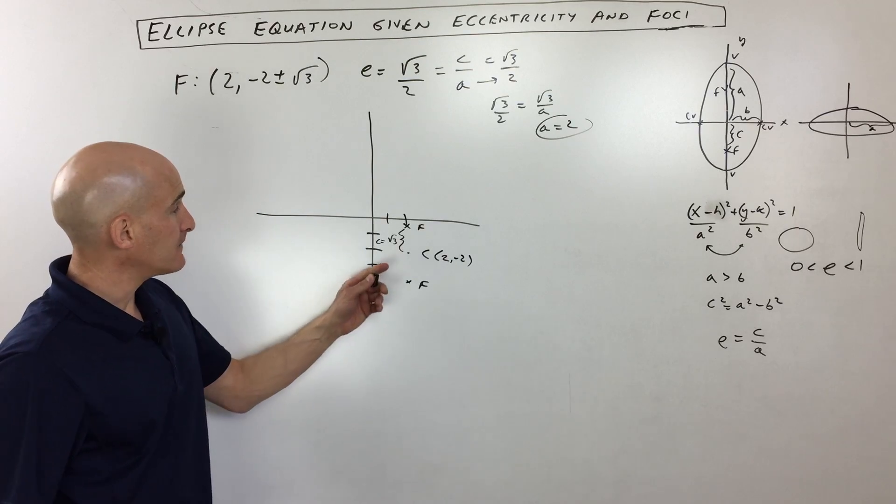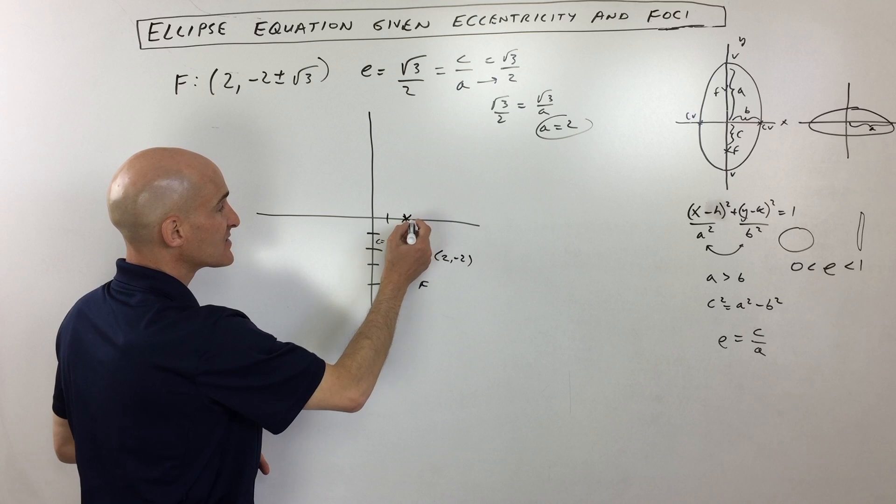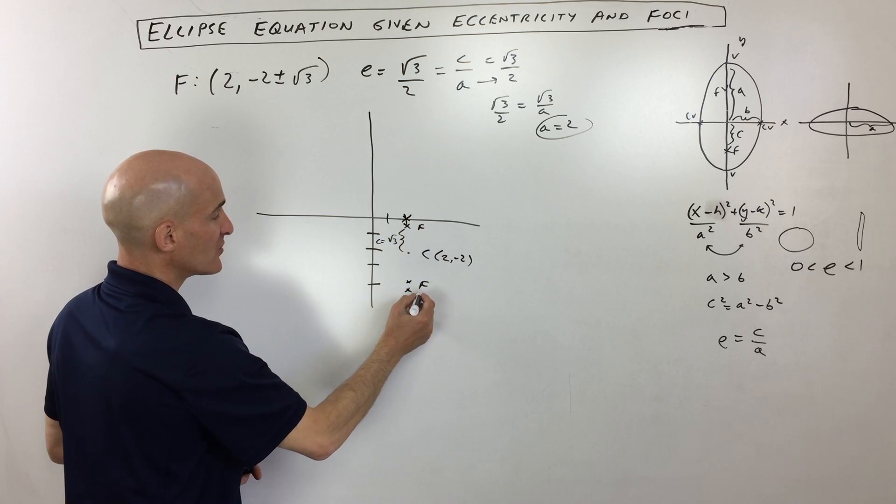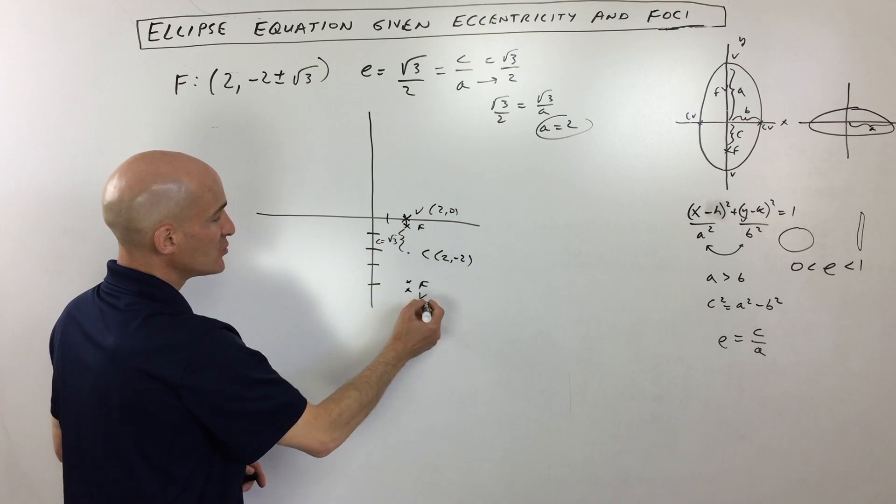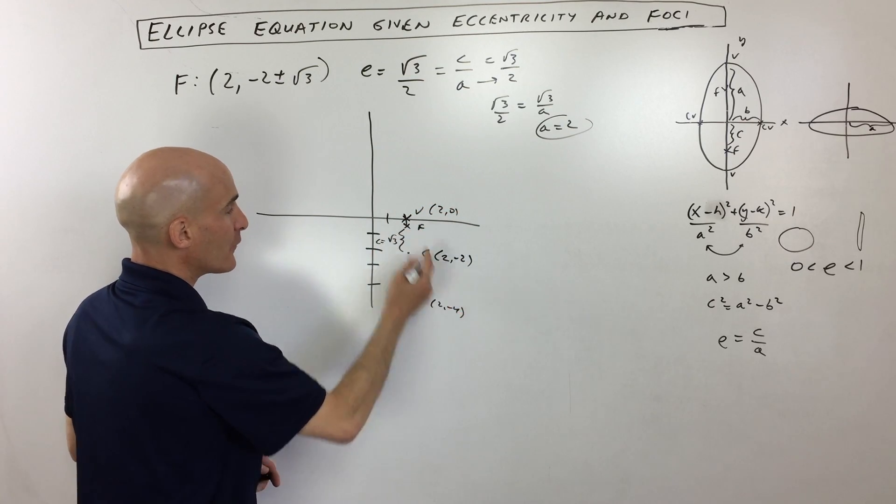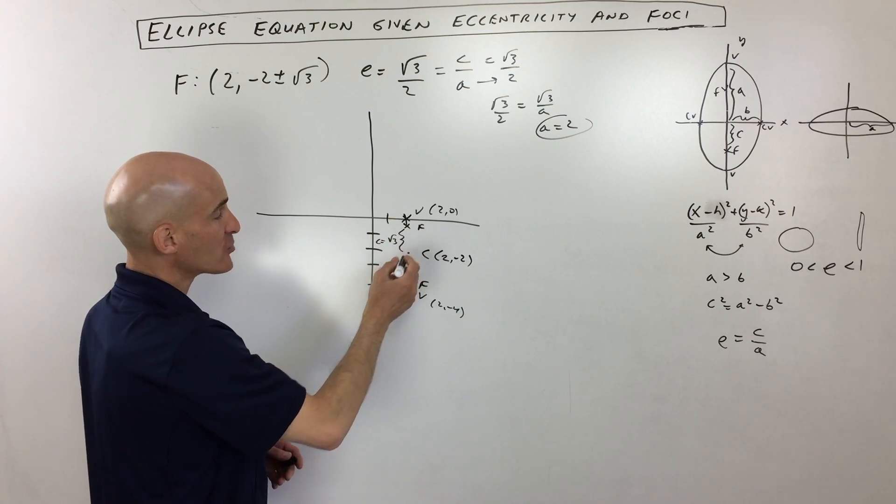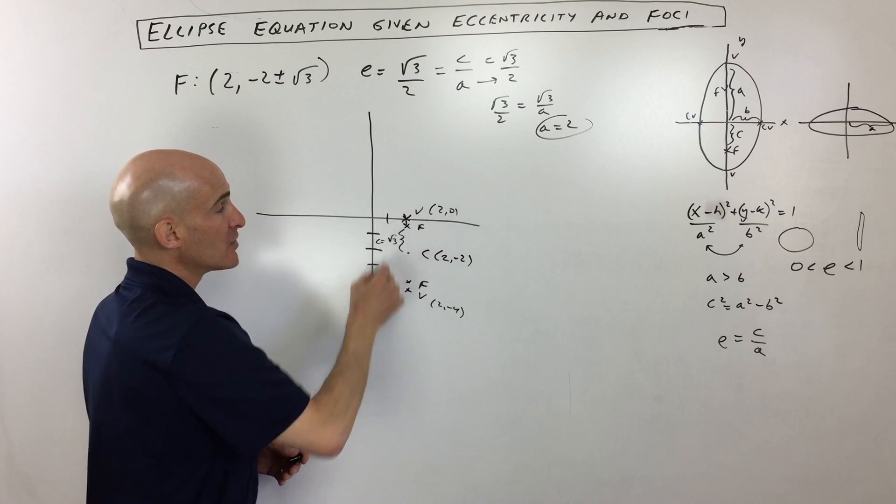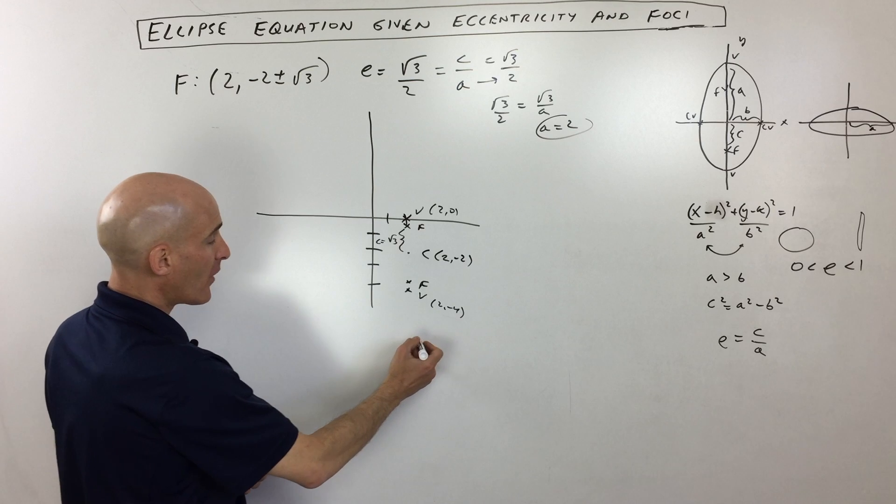Now, what that means is that from the center to the vertex, that distance is 2, and then same thing here, down 2. So these are our vertices right here at 2, 0 and 2, negative 4. Now, the foci and the vertices are always on the longer axis, the major axis. So you can see it's going to be stretched more in this vertical or this y direction.